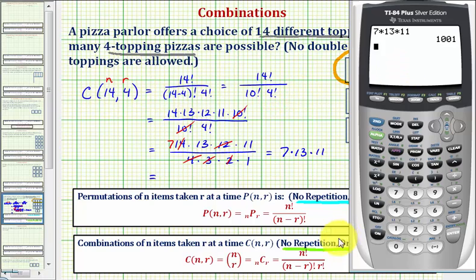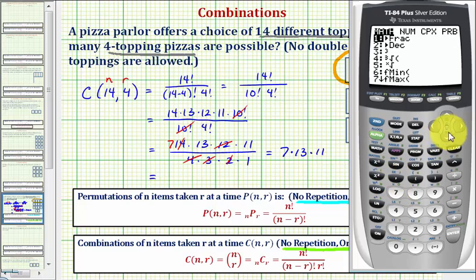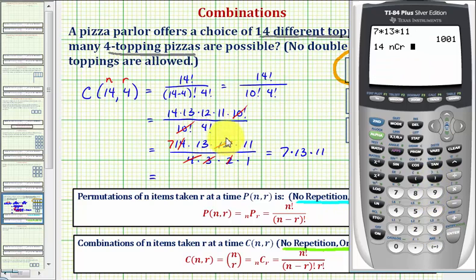To do this, the calculator uses this notation here. So we begin by entering n, which is 14. And now we'll press math, right arrow to probability, option three for a combination. Now we enter r, which is 4, and enter.